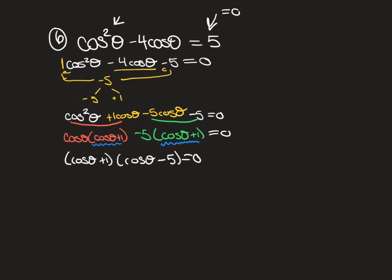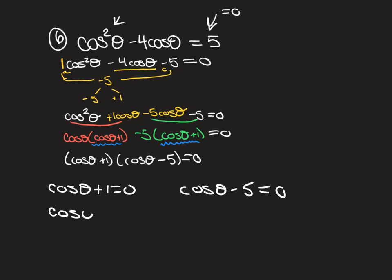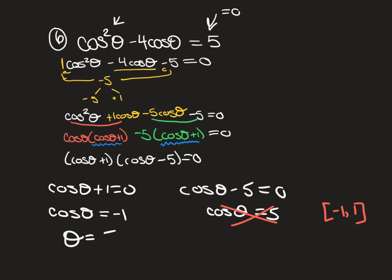Setting each factor to zero: cosθ + 1 = 0 gives cosθ = −1; cosθ − 5 = 0 gives cosθ = 5. Cosine only ranges from −1 to 1, so cosθ = 5 has no solution — cross it out. Cosθ = −1 happens at θ = π. That's the one answer for this problem.